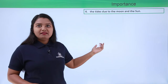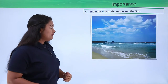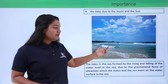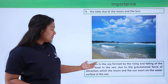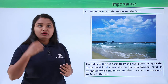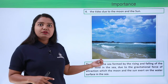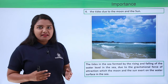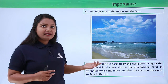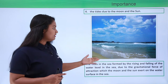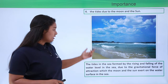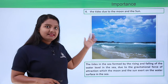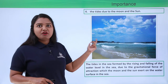Another phenomenon we notice on the earth is tides. Tides are the raising and lowering of the water level in the sea. These tides are also due to gravitational force — specifically the combined gravitational attraction of the sun and the moon onto the earth, which causes the water level to rise and lower, resulting in the formation of tides.